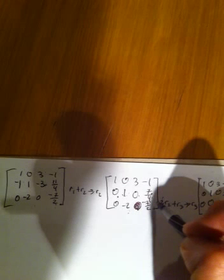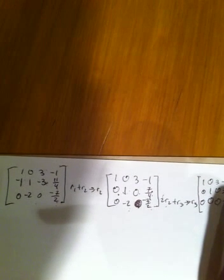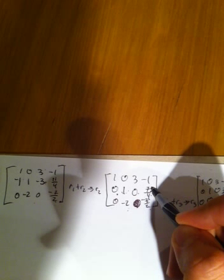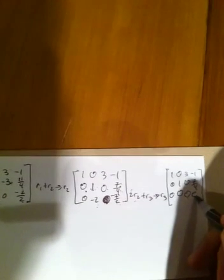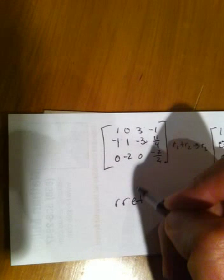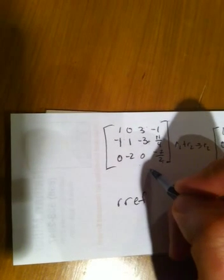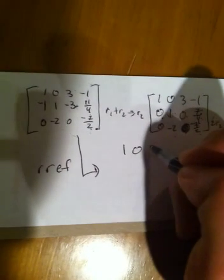Sorry, this is a 0 right here. And then there's 7 over 2 goes here. So that's 2 times 7 over 4 is 7 over 2 plus negative 7 over 2, so that's 0. So reduced row echelon form of this matrix is 1, 0, 3, negative 1.